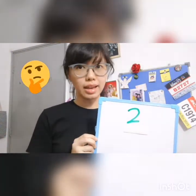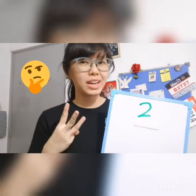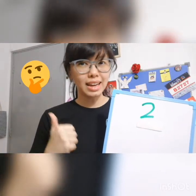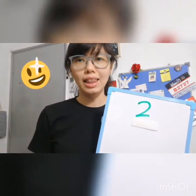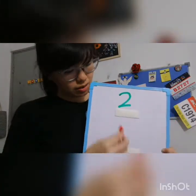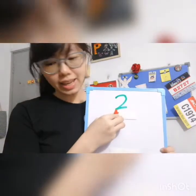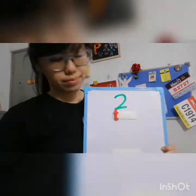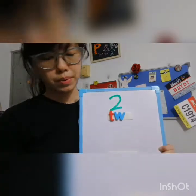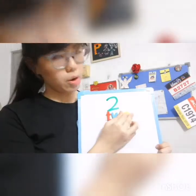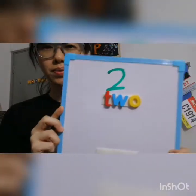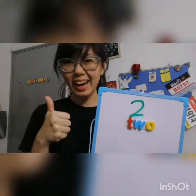There are 3 letters. Got it? Let's check together. Did you spell T-W-O, 2? Got it?